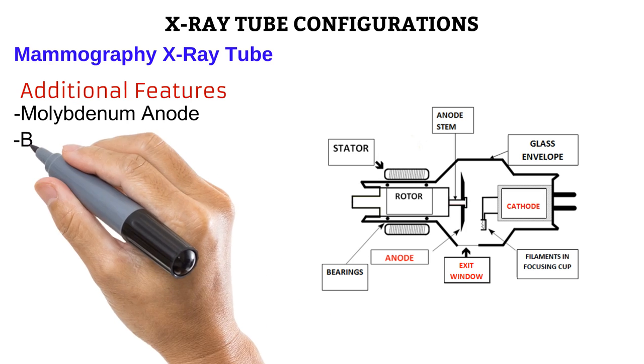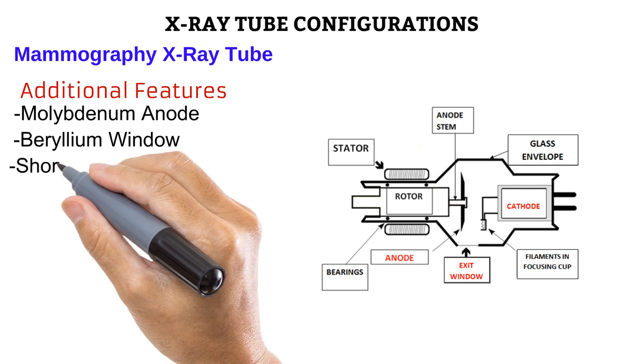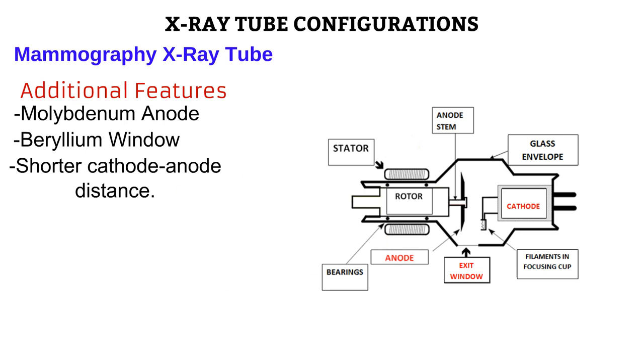Also, their exit window is made of beryllium instead of the glass in standard X-ray tubes. Like we mentioned, the photons produced by mammography tubes have a lower KV or energy. If the exit window was made of glass, it would absorb these low-energy photons. By using a much thinner material like beryllium, photons can easily pass through. Also there is a much shorter distance between the cathode and the anode. This allows less work to be done in moving electrons from the cathode to the anode. When less work is done, there is less heating and the life of the filament is prolonged.